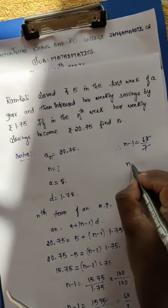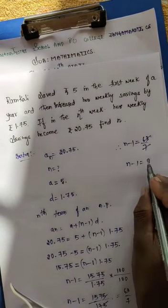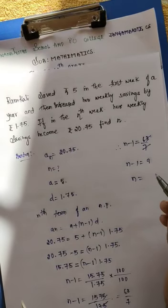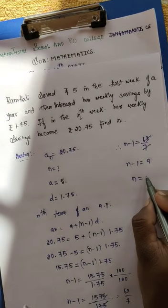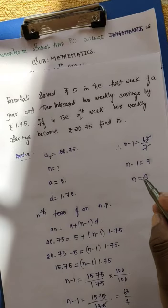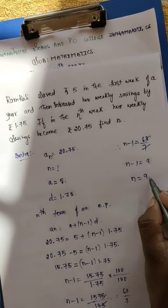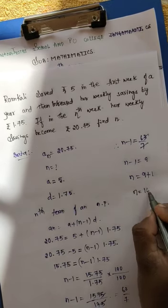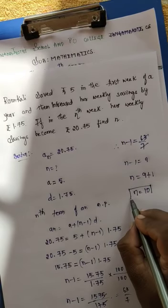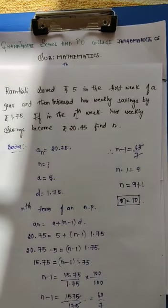Here 7 nines are 63, so n minus 1 equals 9. We can transfer minus 1 from LHS to RHS, so minus 1 becomes plus 1. Hence we get the value of n is 9 plus 1, which is 10. Hence the total number of weeks is 10. Thank you one and all, and have a nice day.